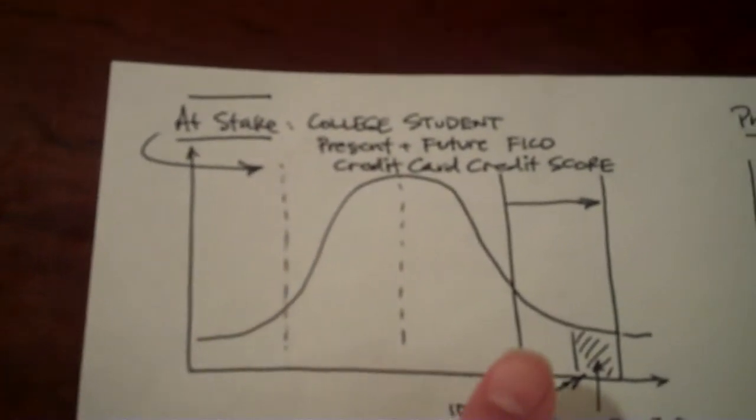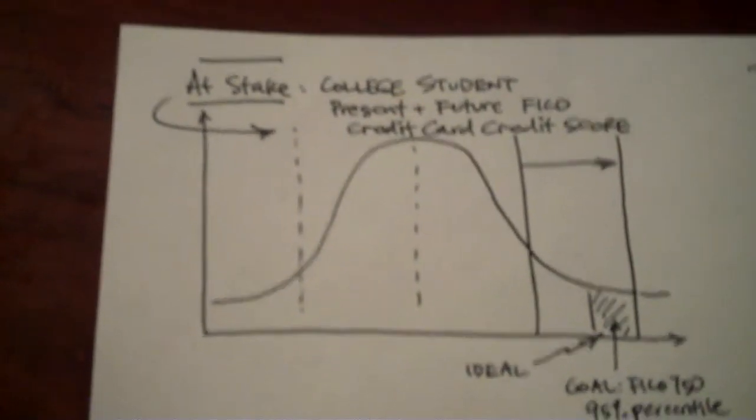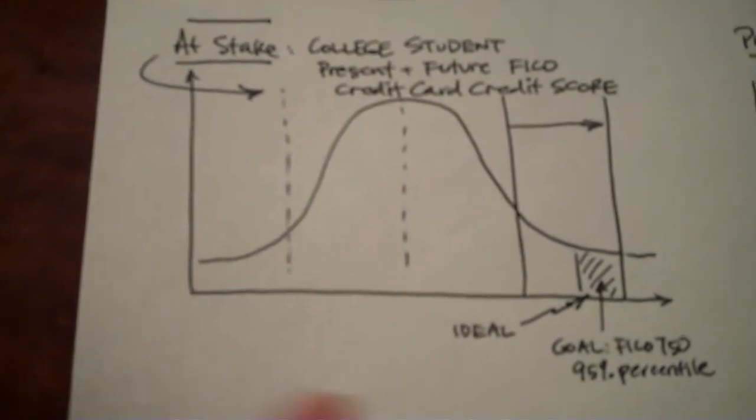This is quantity of students. This is time. This is the right side of the bell curve. So everything that I'm going to be talking about is going to shift you to the right side of the bell curve for your college student FICO score.